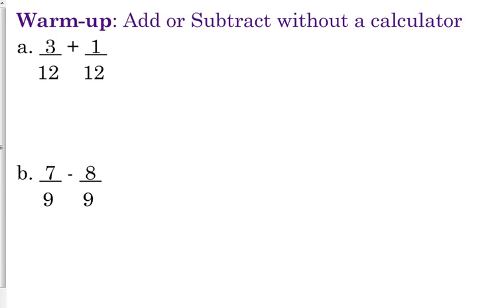As long as they have the common denominator, all you have to do is add their numerator. So that first one would be 4 over 12, which can be simplified. That means we should simplify it. Both are divisible by 4, so that simplifies to 1 third. For the other one, 7 minus 8 is negative 1, so we've got negative 1 ninth for the other one.